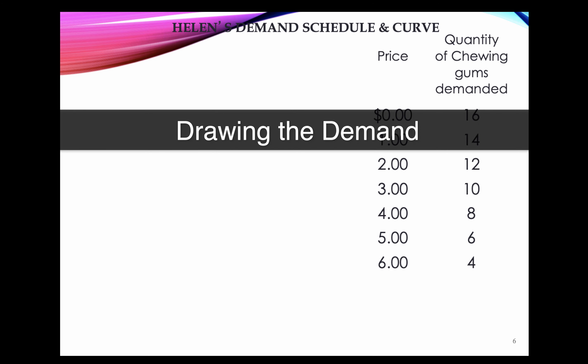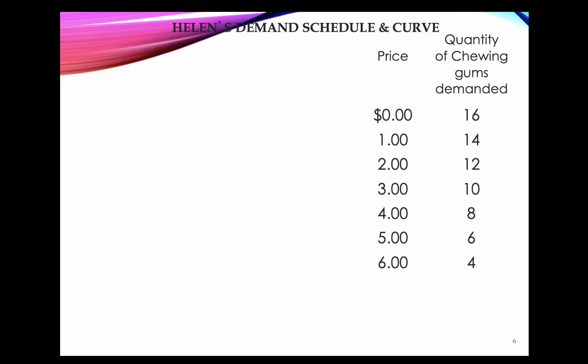A demand schedule is a relationship between the price and the quantity demanded of a good. Once we have these numbers giving us the different quantities demanded at various prices, we can now represent this in a graph.